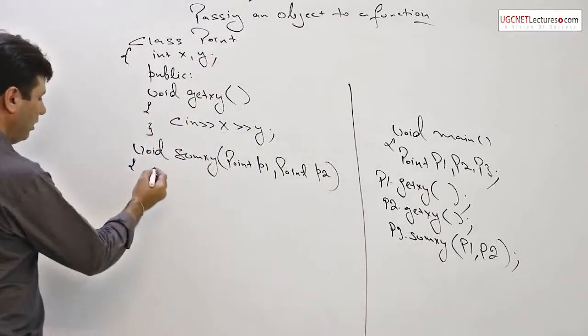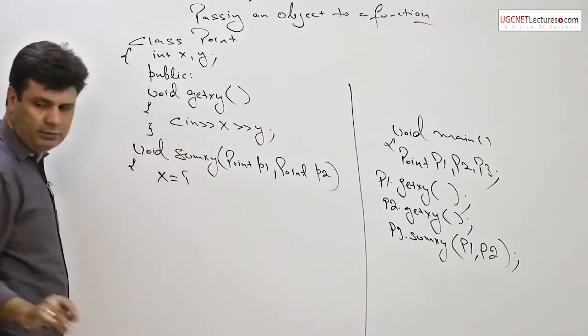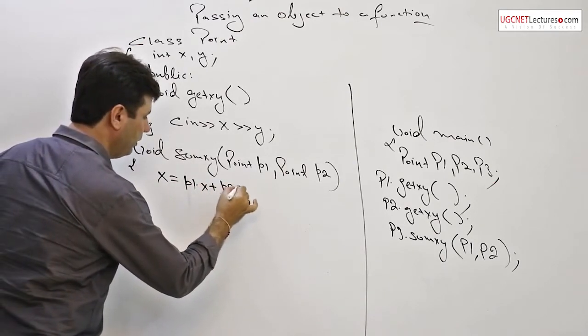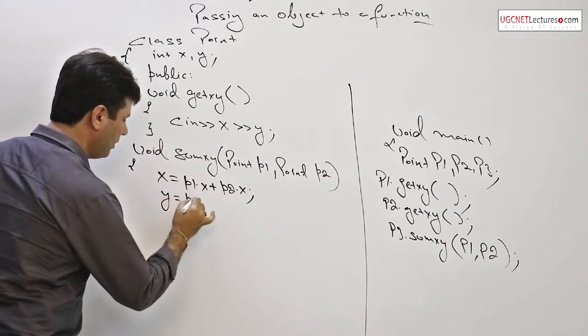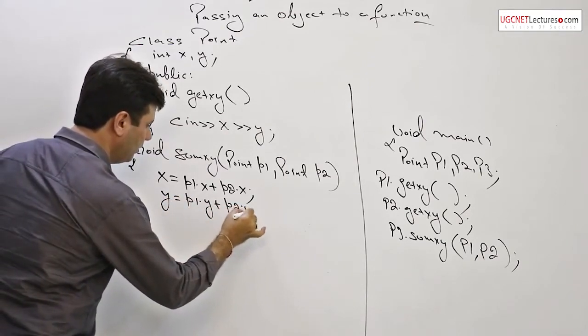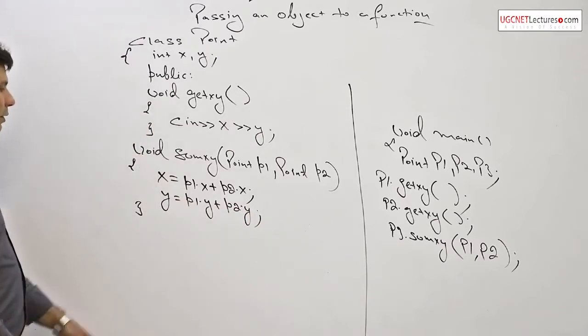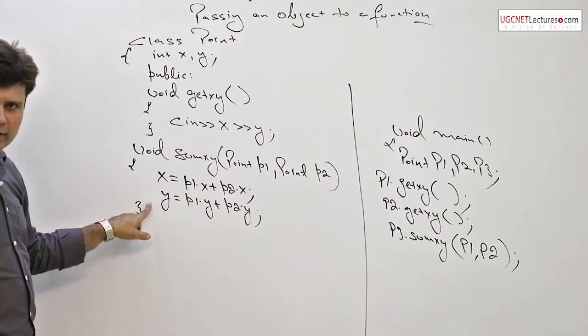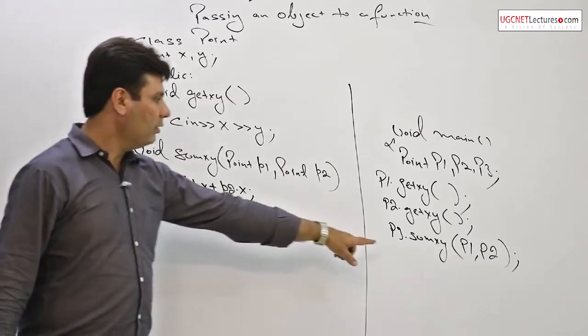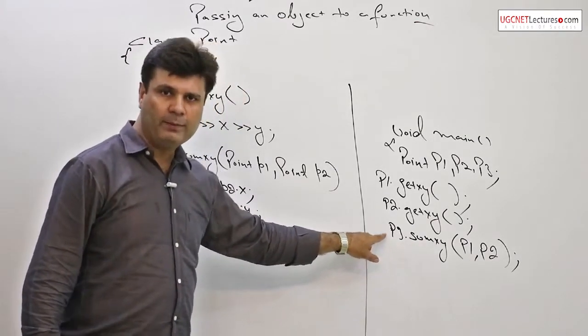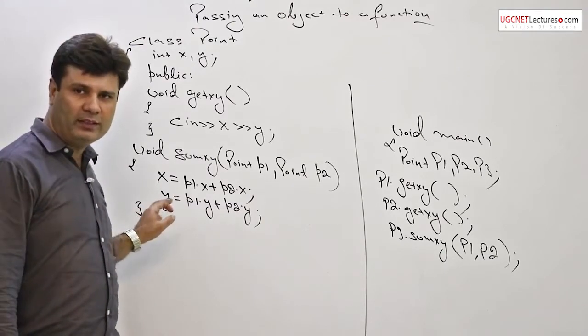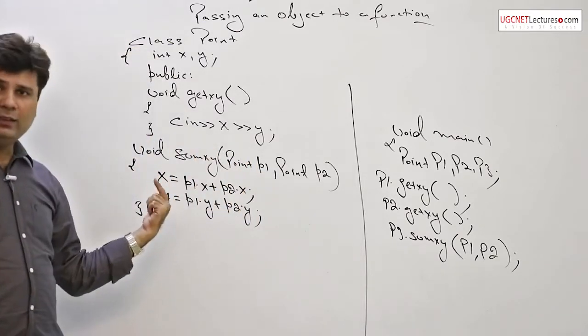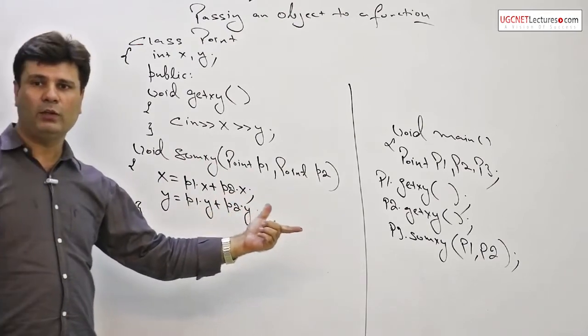So whatever the values get stored over here: x equals p1 dot x plus p2 dot x, y equals p1 dot y plus p2 dot y. Whatever the value of p1 dot x and p2 dot x, p1 dot y and p2 dot y will get stored in x and y. No reference is provided over there, and in this case, in case of classes right now sum xy is called by p3 object. So value will get stored automatically in p3 object which is declared in void main function. So no object p3, third object is required to be passed as an argument.